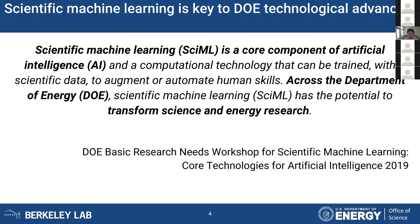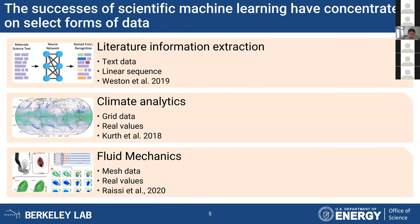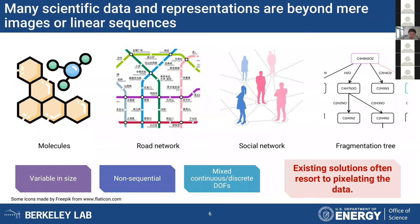Within the DOE, there's a strong trend of applying machine learning and artificial intelligence to enhance our capability in carrying out scientific research. We've had a few success stories. For example, we can now use machine learning to automate the extraction of information from existing scientific literature. We can also use machine learning to detect patterns from climate simulation or to infer the velocity field from a visualization of the fluid. But these are all machine learning results carried out on a field — using a regular grid, mesh, or sequence.